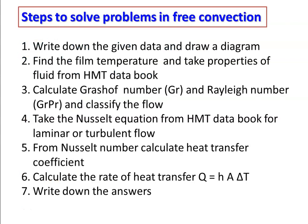The steps to solve a problem in free convection heat transfer: First, write down the given data from the problem statement and draw a diagram. Find the film temperature and take the properties of the fluid from the heat and mass transfer data book. Calculate the Grashoff number, then the Rayleigh number (Gr × Pr), and classify the flow — laminar when Gr·Pr < 10⁹, turbulent when Gr·Pr > 10⁹. Take the Nusselt number equation from the data book based on flow condition and geometry.